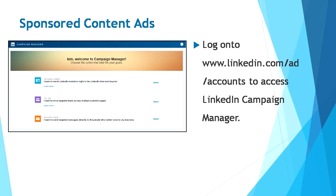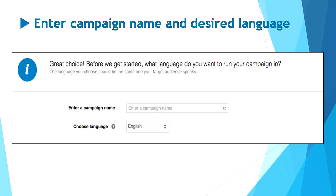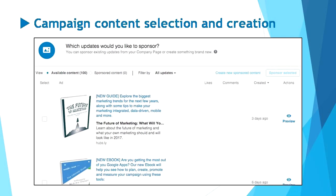You will then be required to create an ad account for the campaign. To create an ad account, you will need to set up a company or showcase page. You can easily create it within your LinkedIn account, as it only takes a couple of minutes to fill in the required information. Then add in some basic account information for your new campaign: your company name, your account name, and select your preferred currency. Now you'll be customizing your campaign, whereby you need to enter a name for your campaign as well as a desired language. Then it's time to move on to the content selection and creation. LinkedIn will offer a list of available contents where you can browse, choose, and determine what content you'd like to sponsor. Campaign Manager gives you the choice to either sponsor existing updates or create a new sponsored update.